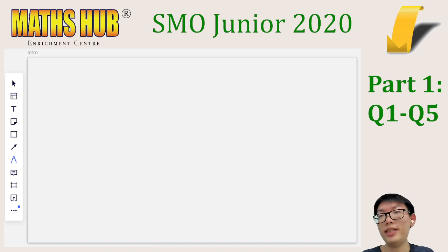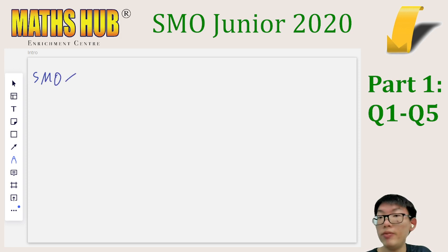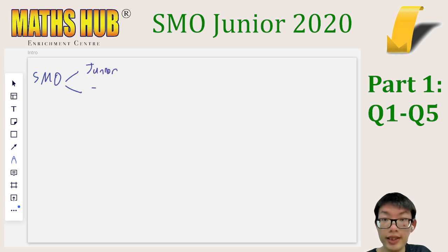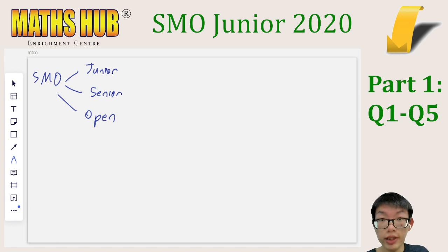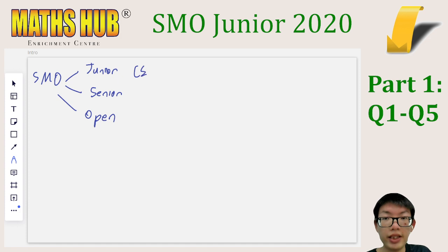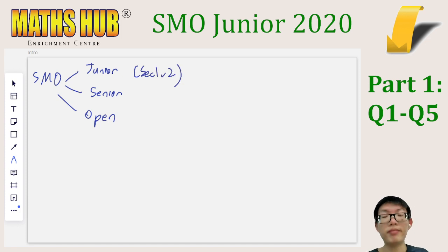The SMO is the Singapore Math Olympiad and there are three sections: the junior section, the senior section, and the open section. We will try to do videos for the other two sections pretty soon, but we're going to start with the SMO Junior, which is meant for Secondary 1 and 2 students in Singapore. This is equivalent to 7th and 8th grade in most other countries.